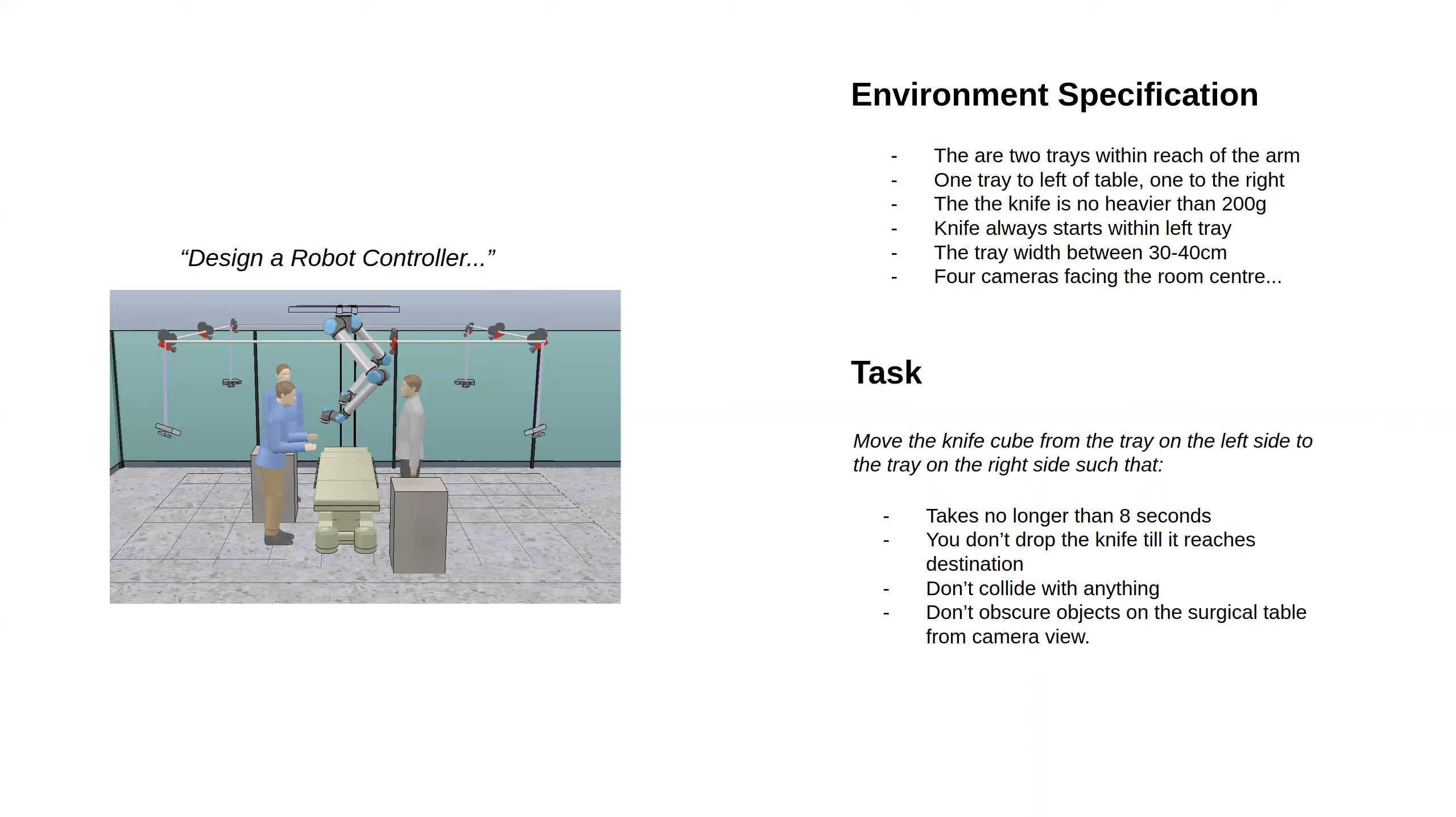One is the task specification itself, saying what the goal is and the relevant constraints where I'll fail if I don't do these things. On the slide I've put: move the knife from the tray on the left to the right side such that it takes no longer than eight seconds. If I drop the knife before it reaches destination, that's a failure. I don't want to collide with anything. Maybe I have a perception constraint: I don't want to obscure objects from the camera. Those things make up the task specification.